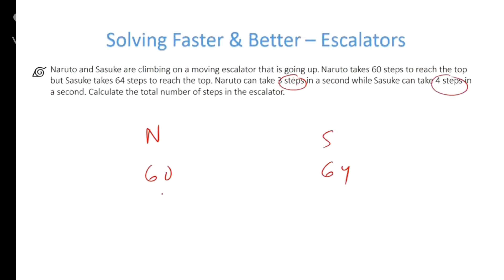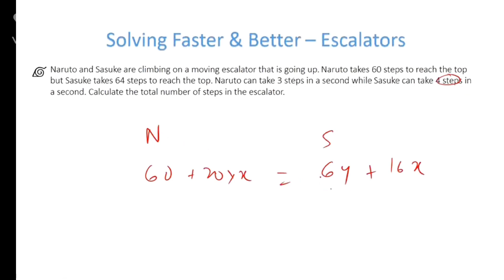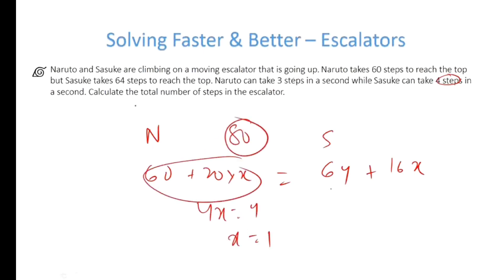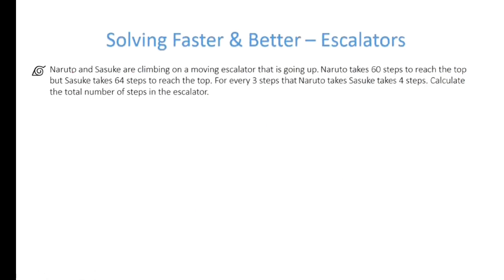Naruto is taking 60 steps and Sasuke is taking 64. Naruto takes 3 steps per second, so he takes 20 seconds; the escalator will take 20x steps. Sasuke takes 64 ÷ 4 = 16 seconds, so the escalator takes 16x steps. These should be equal. Solving gives 4x = 4, so x = 1, and total steps = 80.